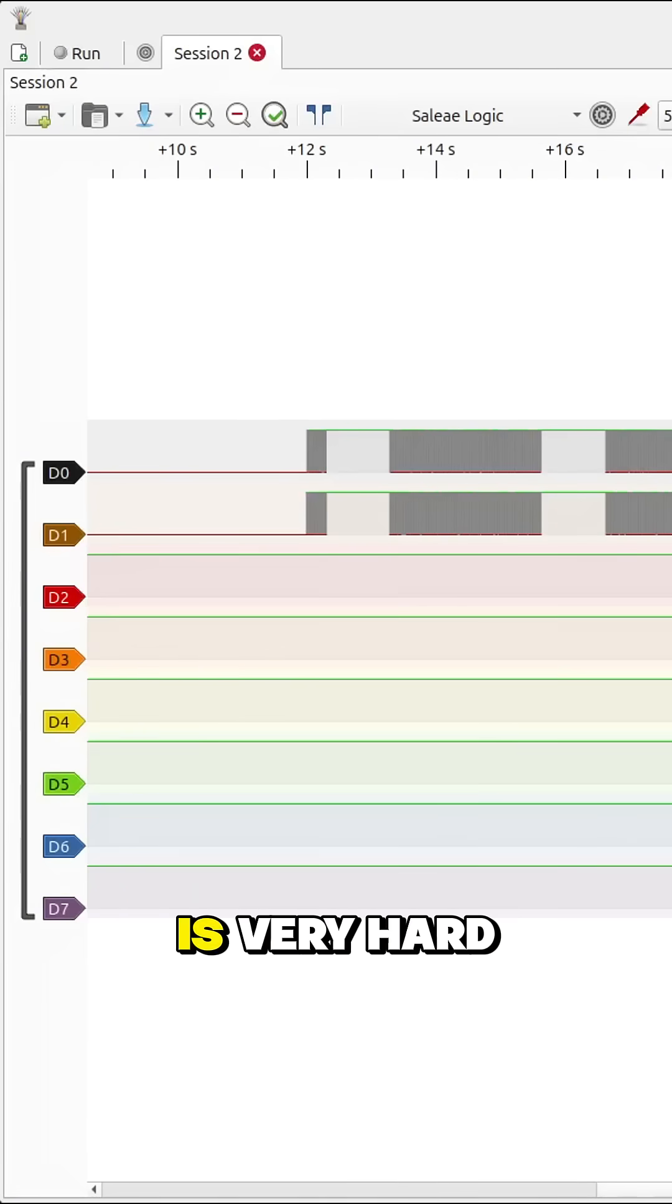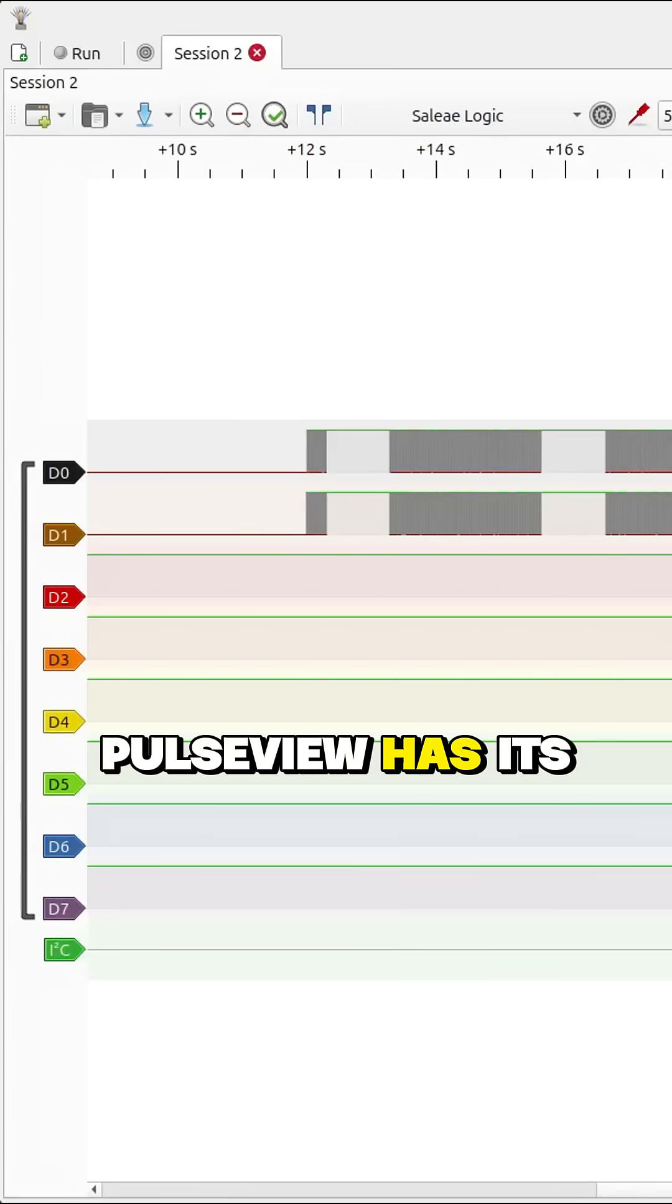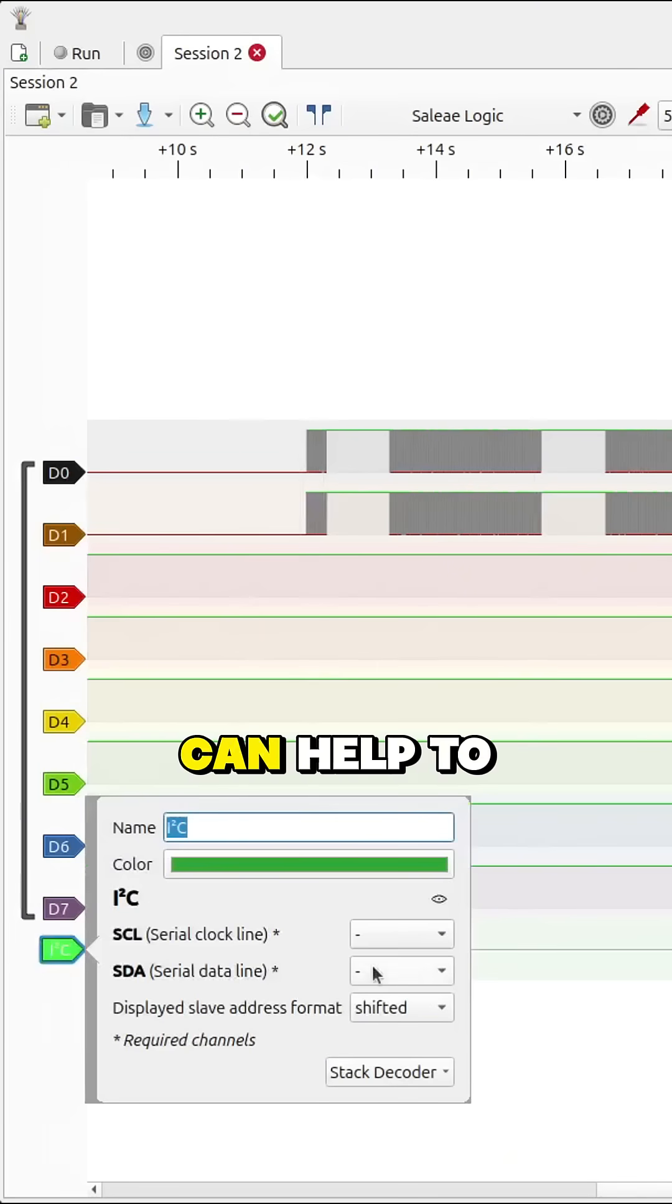Now, on its own, this traffic is very hard to decipher. However, luckily, PulseView has its own decoders built in that can help to visualize what's going on with the data.